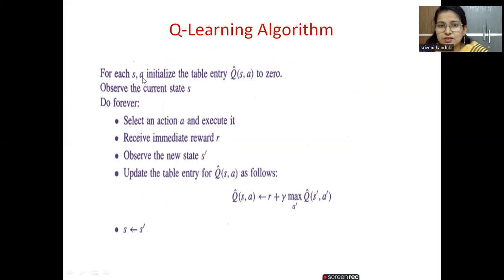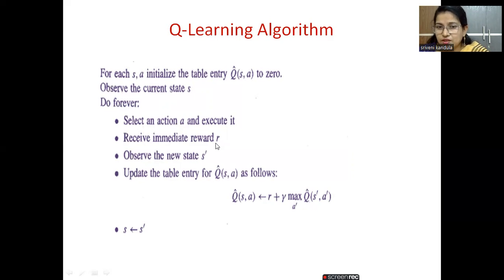In the Q-learning algorithm, in the initial step, for each state s and action a we take a table called the Q-matrix, which is initialized to zero. The number of rows and columns depends on the problem. Then observe the current state, and repeatedly: select an action, execute it, receive the reward, observe the new state, and update the Q-entry table using the update formula. The new state then becomes the current state, and iteratively we perform all these steps again.